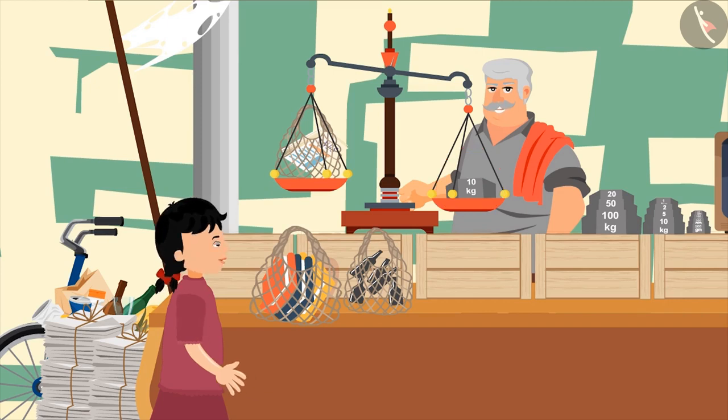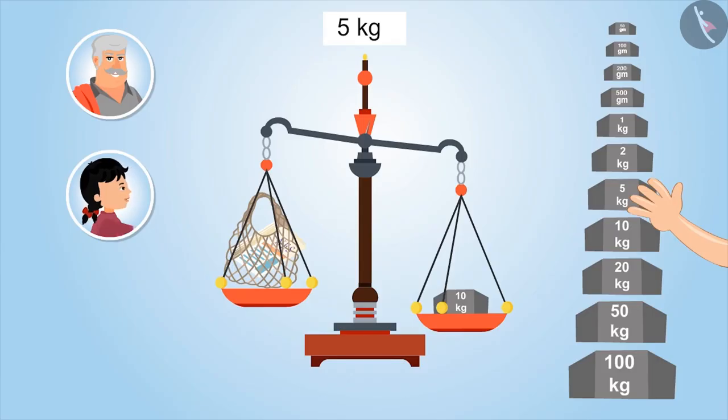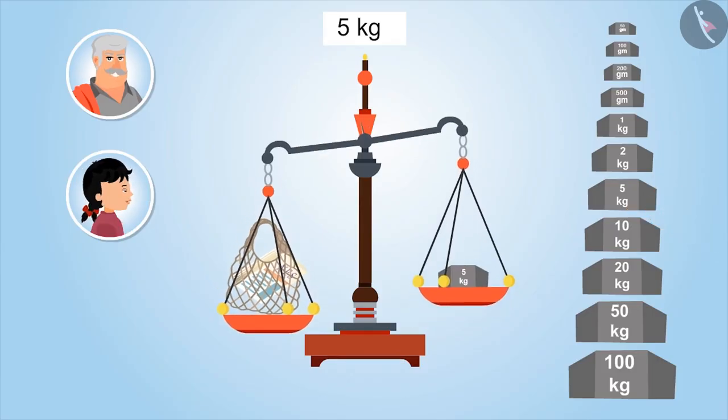"Hmm uncle, what should we do now?" "We will put a stone which weighs less than ten kgs. So can you tell me which weighing stone is smaller than ten kgs?" "Five kgs!" "Let's place this. Uncle, now the side carrying the newspaper has moved downwards, which means the weight of the newspaper is more than five kgs."